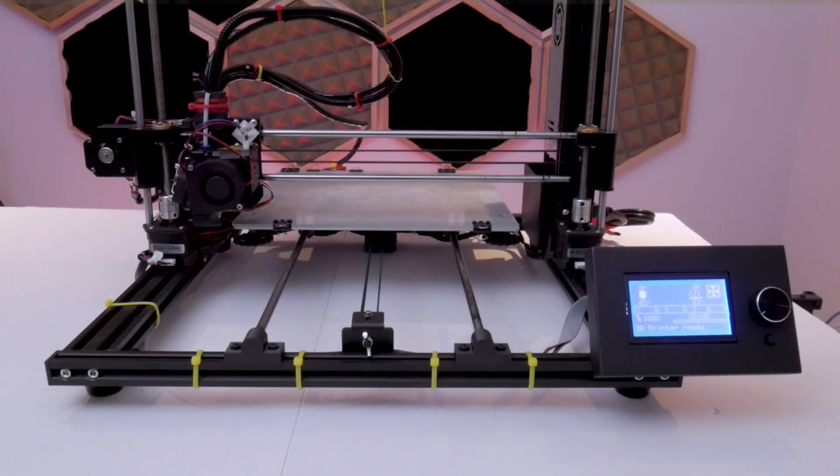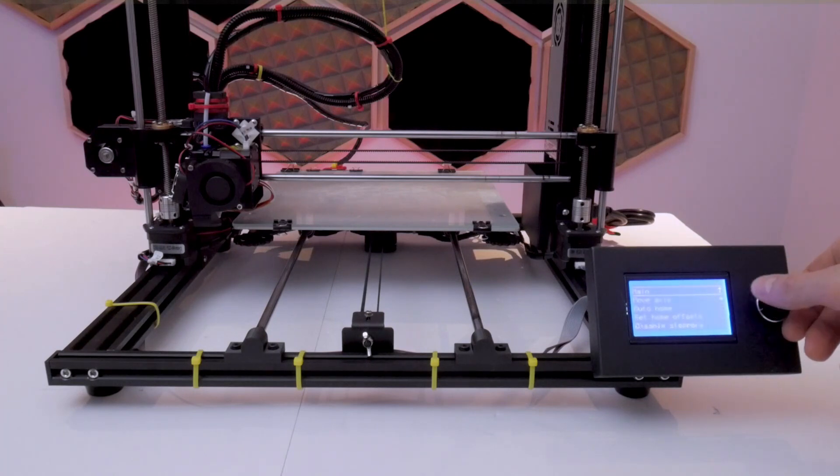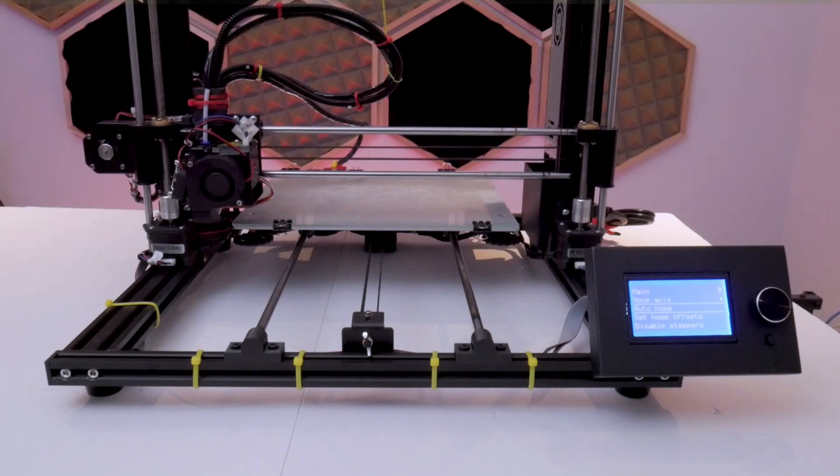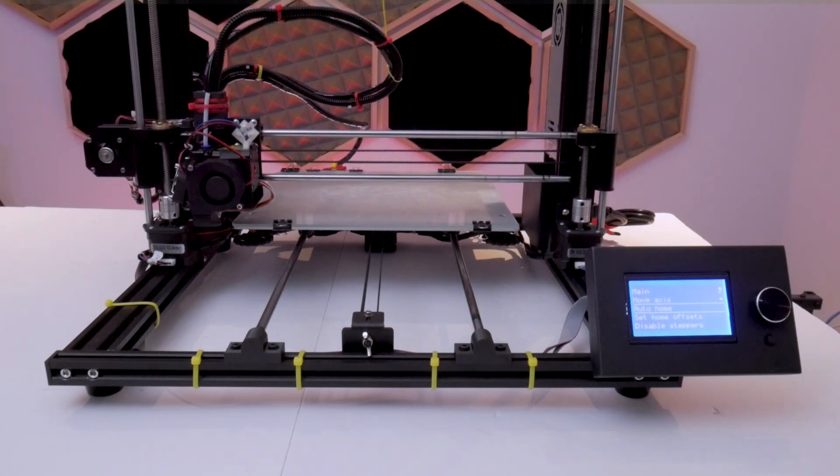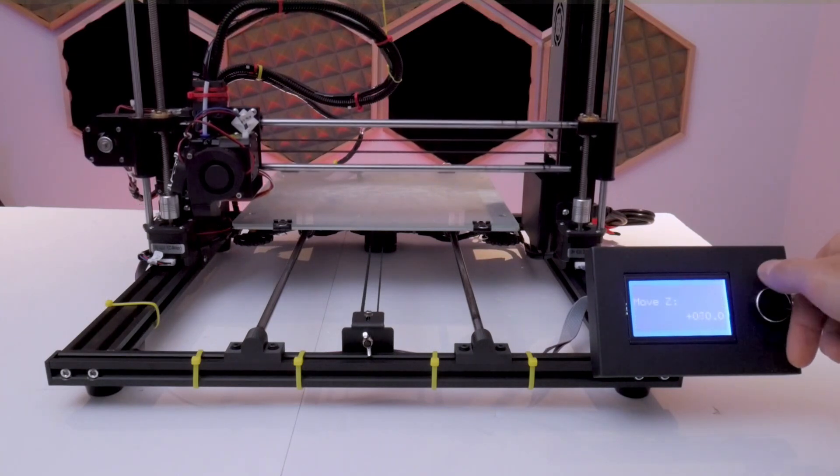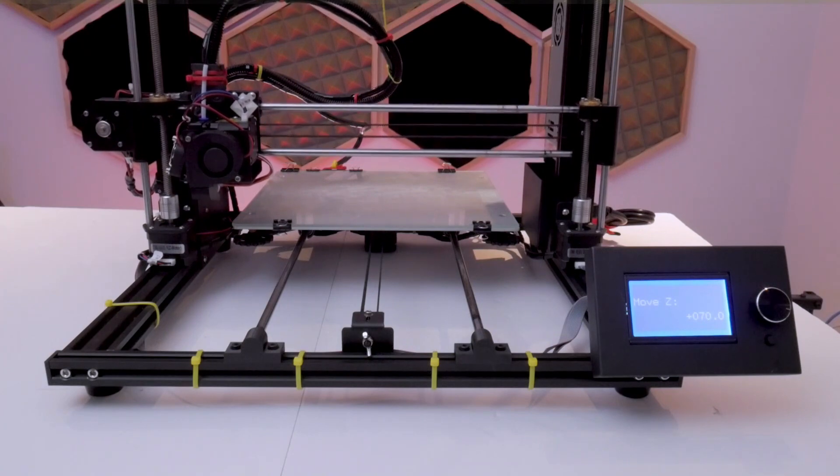Now you're going to turn your printer on and home the Z-axis so you have a zero point Z reference. Then move the print head up about 50 to 70 millimeters so you have some room to work around the existing Z end stop, and leave your printer on so it doesn't lose that Z zero reference.